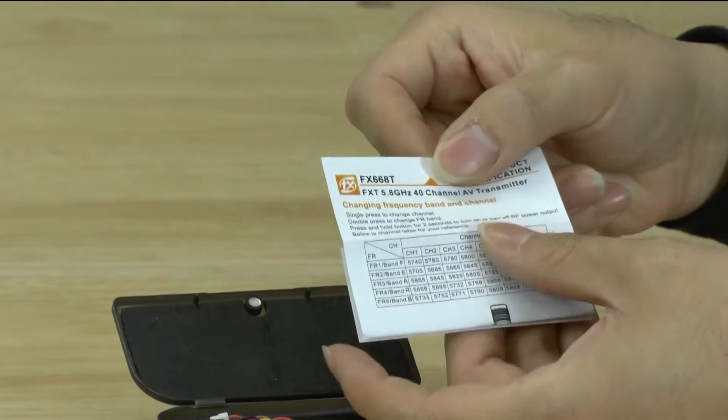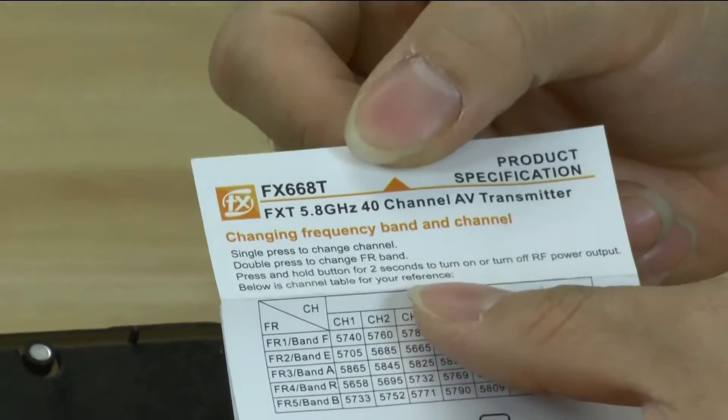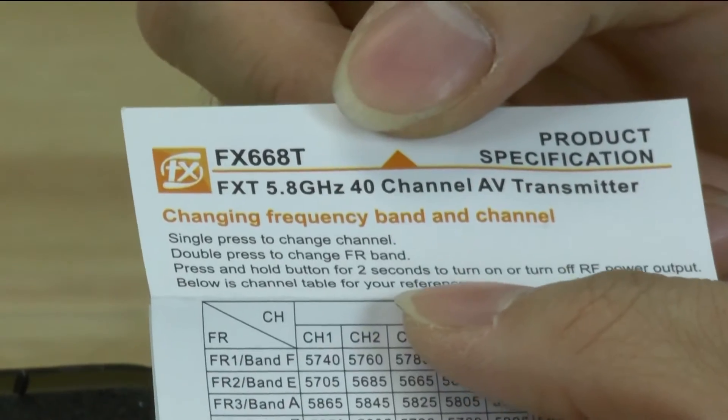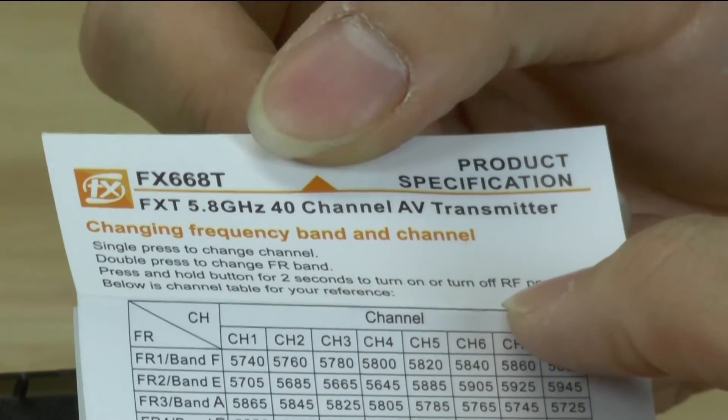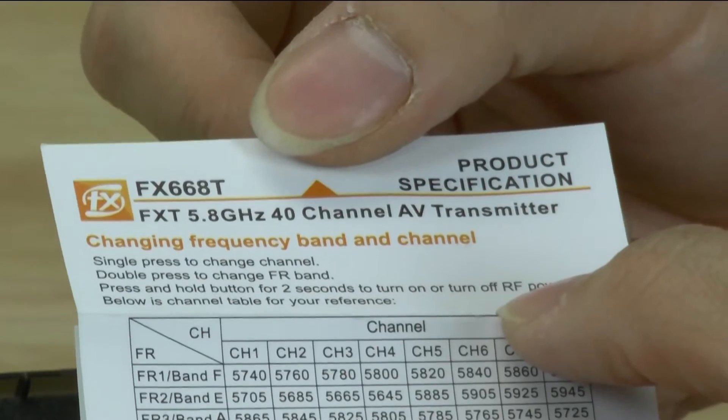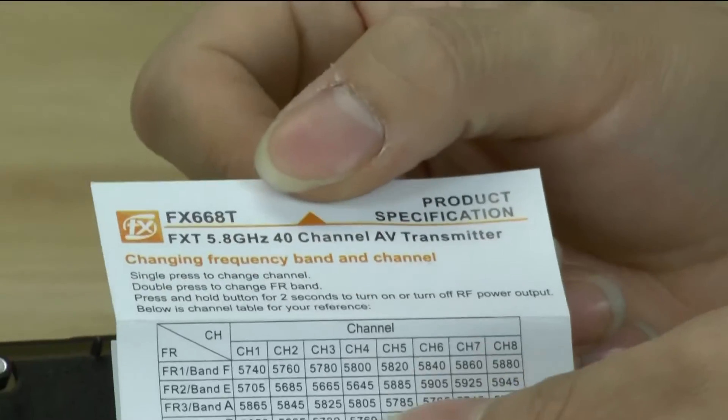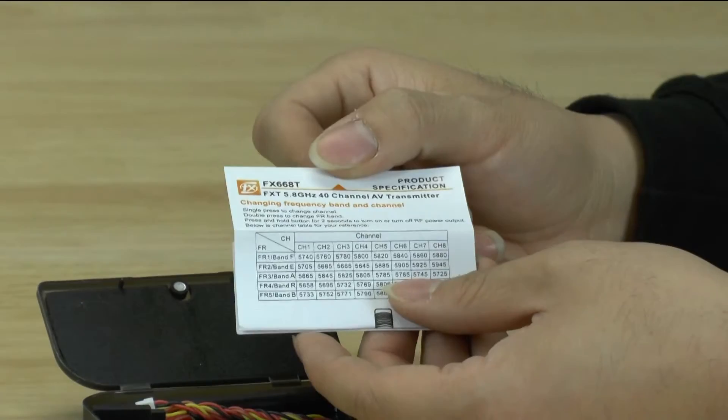The only difference is up here, the controls are a little bit different. On this specific VTX you can now turn on and off the RF power so you can actually control when to broadcast that video signal. So that's very useful especially when you're attending racing events.